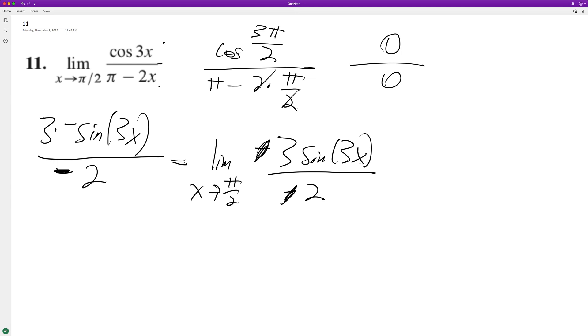All right, so we plug in pi over two on the unit circle. Oh, excuse me, pi over two is up here. I don't know why I thought three pi over two, but it's still zero. Okay, so anyway, we plug that in and we get three times sine of, oh, it is three pi over two, what am I talking about? It's down here.